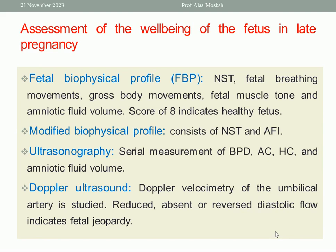Use of fetal biophysical profile. The fetal biophysical profile includes five items: non-stress test, fetal breathing movement, gross body movement, fetal muscle tone, and amniotic fluid volume. Give a score of two, one, or zero for each item. A score of eight or more indicates a healthy fetus; below that, there is a problem. The modified biophysical profile consists of two items only: non-stress test and amniotic fluid index. The amniotic fluid index is considered oligohydramnios if less than 5 centimeters, and polyhydramnios if more than 25 centimeters.